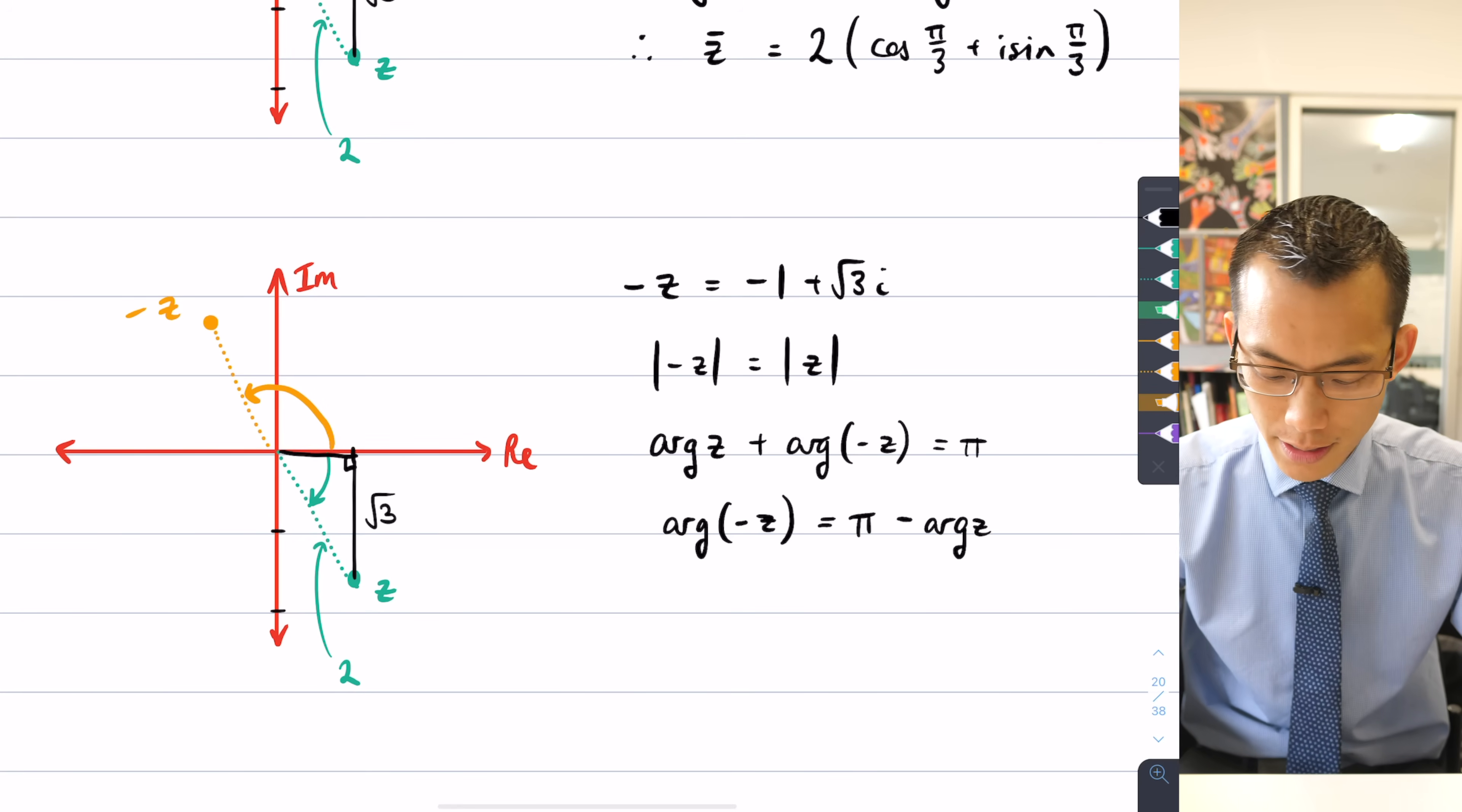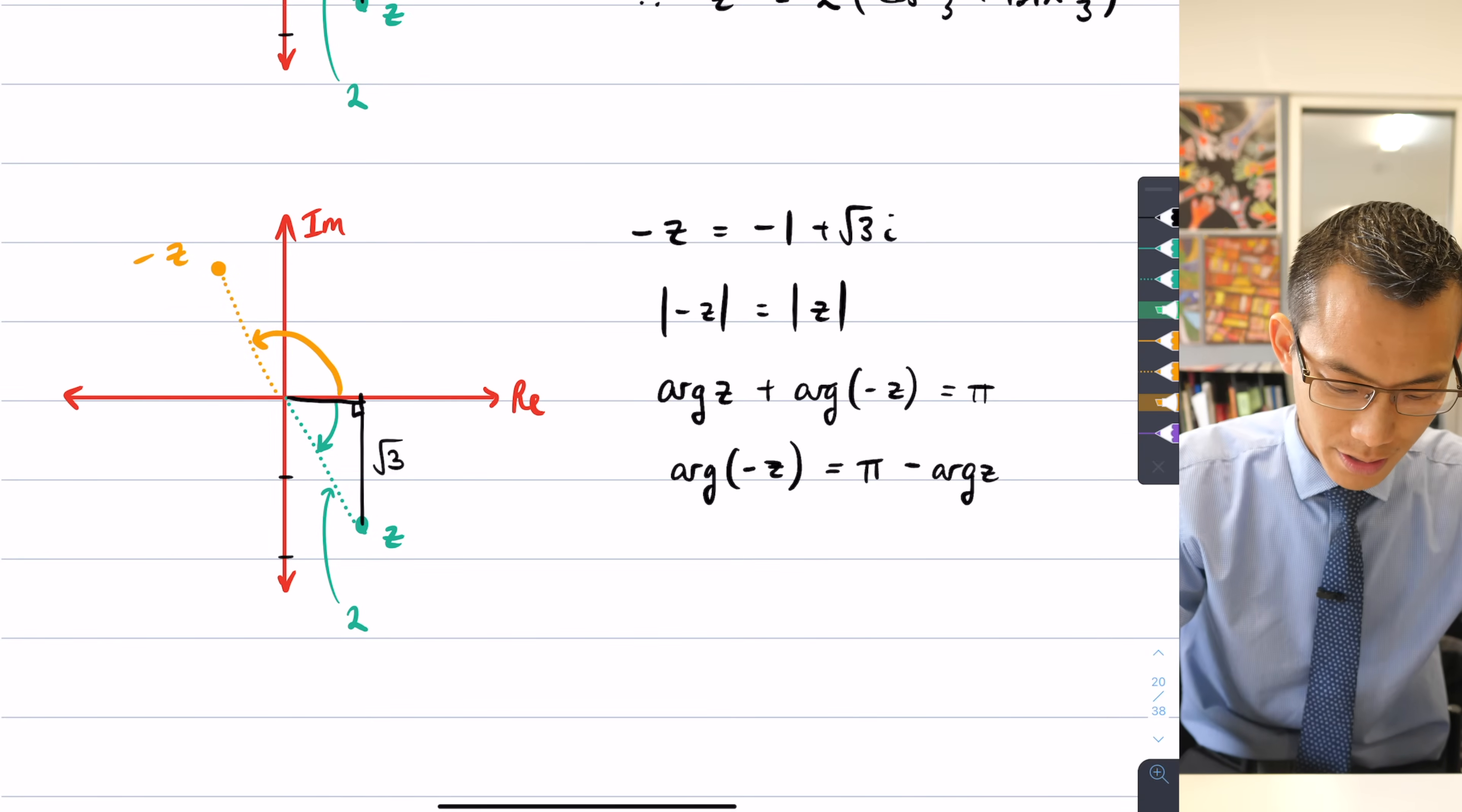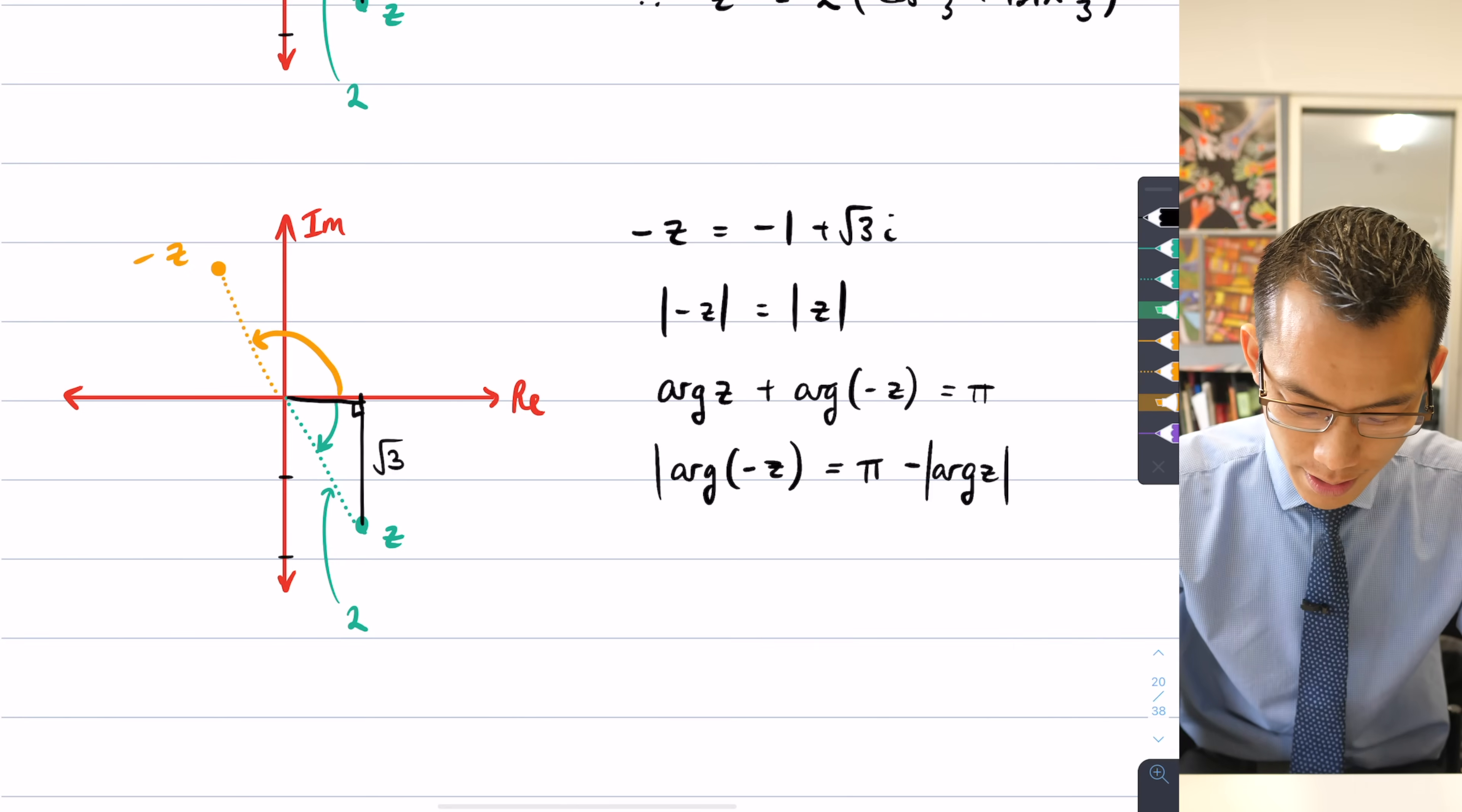And in this case, arg z, as we sort of pointed out, it's going to be the size of it, I should say, it's kind of like the absolute value of these guys, right? Because you've got to watch out for the direction that these all go in. You don't want to be adding and subtracting negatives.